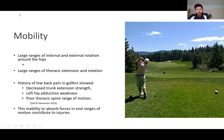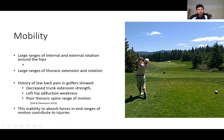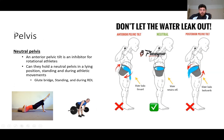For mobility, we want large ranges of internal and external rotation around the hips, and large ranges of thoracic extension and rotation. This has been linked with lower back pain in golfers — we want the lumbar spine nice and stable and the hips mobile with the thoracic spine. Lower back pain was linked with decreased trunk extension strength, left hip adduction weakness, and poor thoracic spine range of motion. We need this rotation around the hips and thoracic to absorb forces in those end ranges, and as we improve those we can train longer and more.